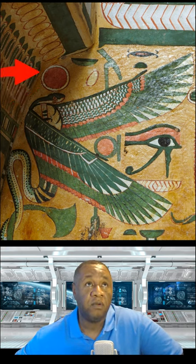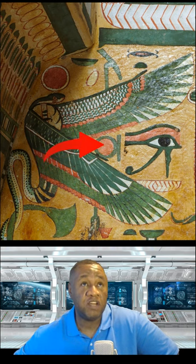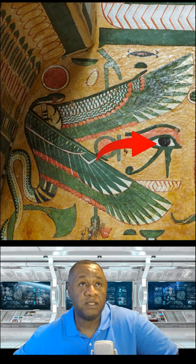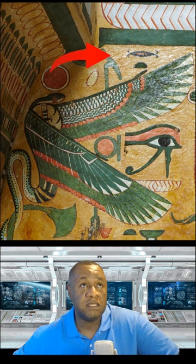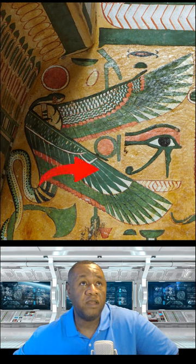Between her wings you see the shen ring, which is another form of power. The udjat eye is also represented there, and if you can see this here, the was scepter right there in the middle.